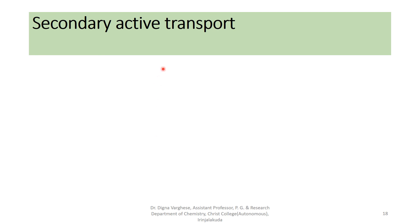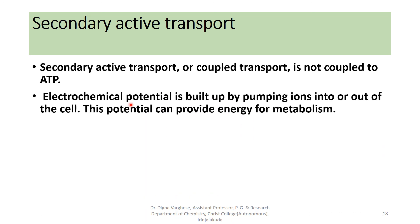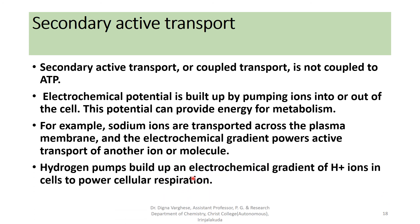Secondary active transport, or coupled transport, is not coupled directly to ATP. Instead, an electrochemical potential is built up by pumping ions into or out of the cell, and this potential provides energy for metabolism. For example, sodium ions are transported across the plasma membrane and the resulting electrochemical gradient powers the active transport of another ion or molecule. Hydrogen pumps build up an electrochemical gradient of H⁺ ions in cells to power cellular respiration. Thank you for your attention.